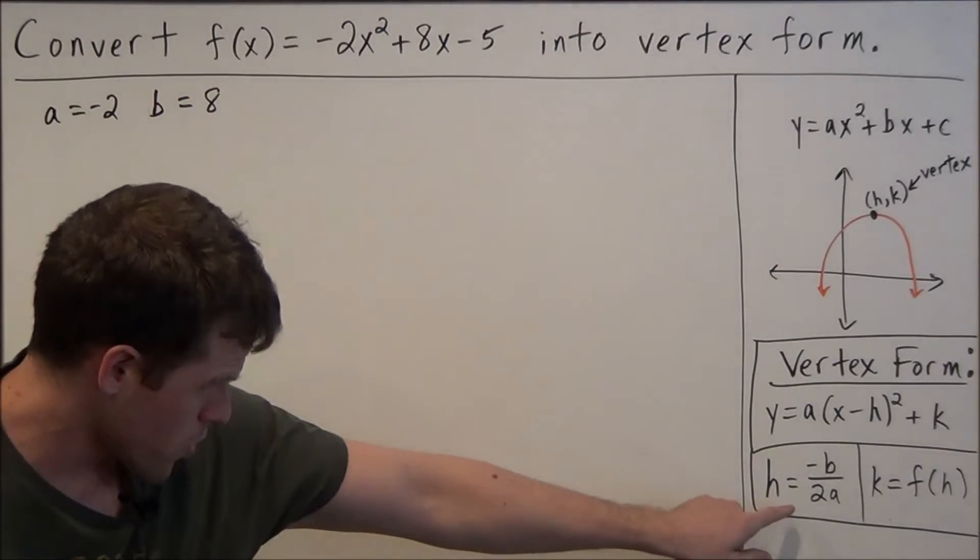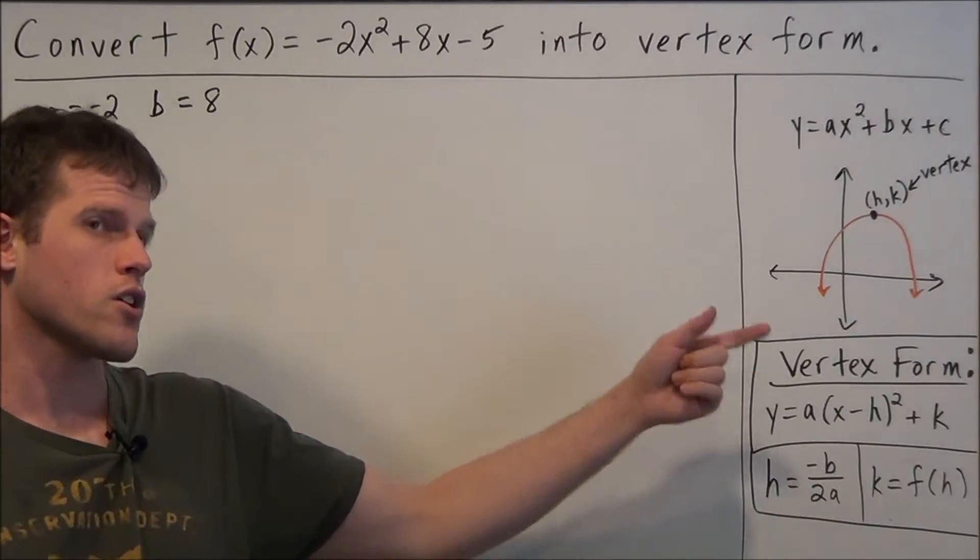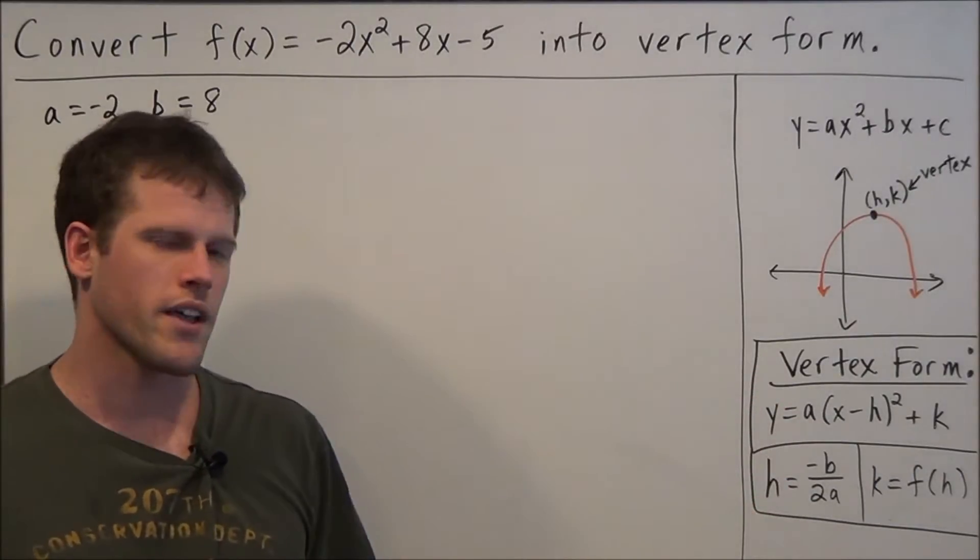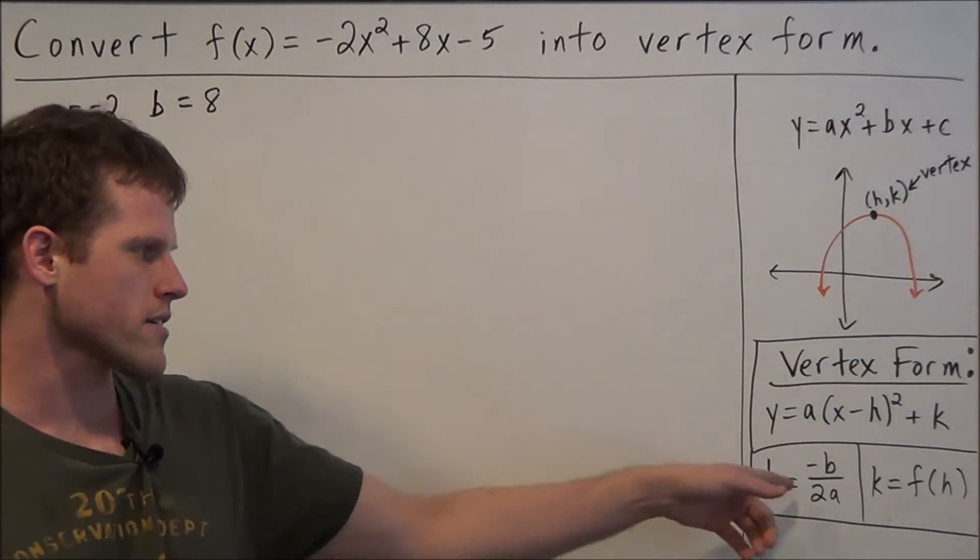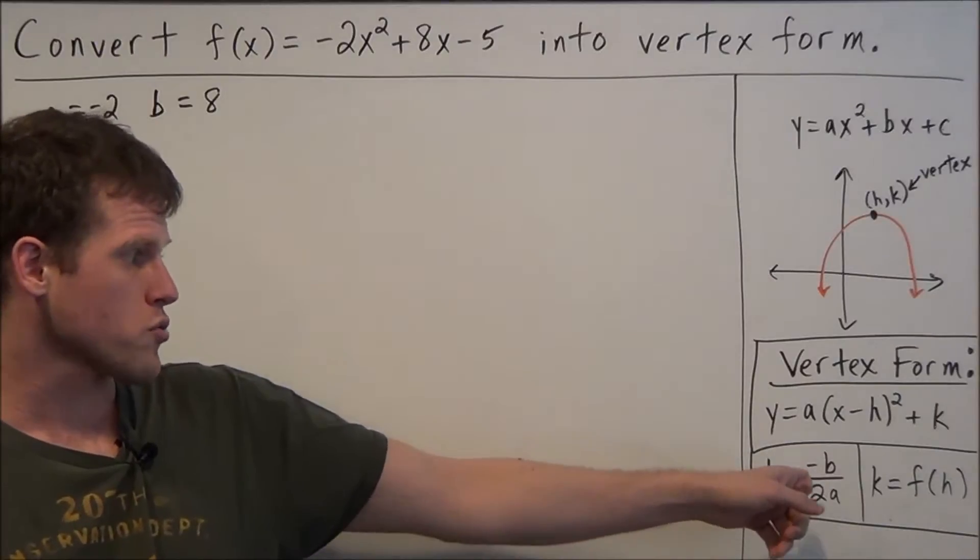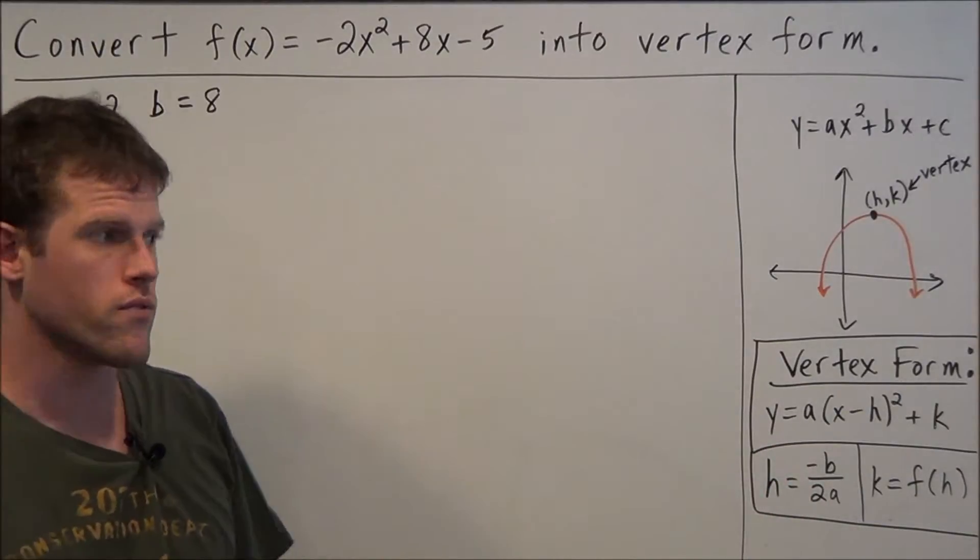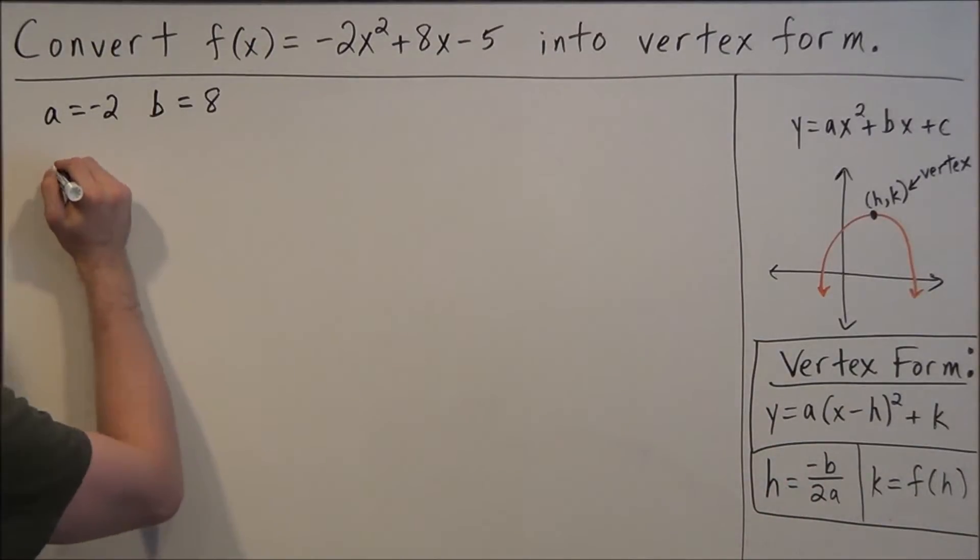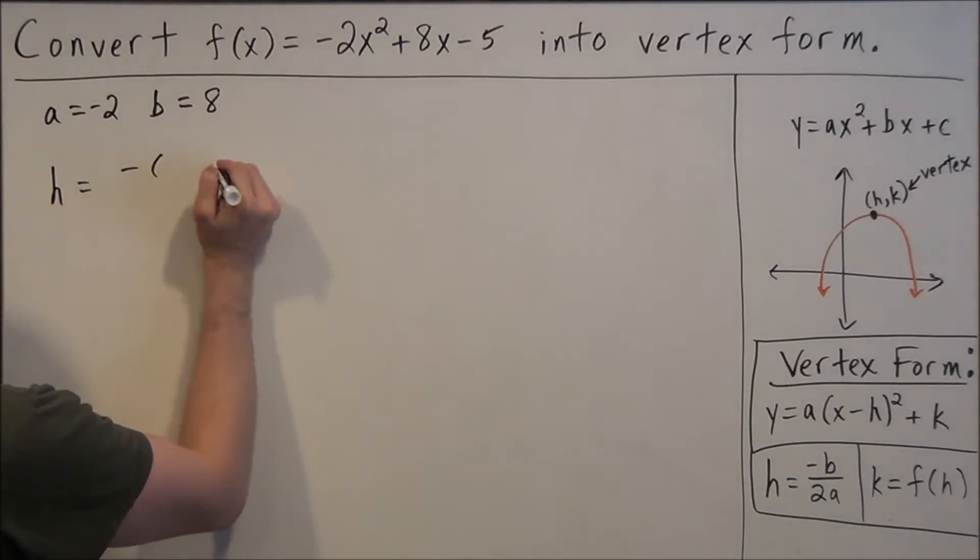So we're going to make use of this equation here. Now this is an equation usually in the form x equals negative b over 2a which tells you the axis of symmetry but it also represents the x coordinate of our vertex. So we have h equals negative b over 2 times a.